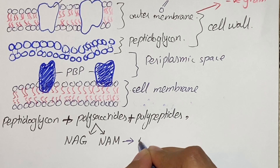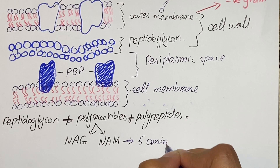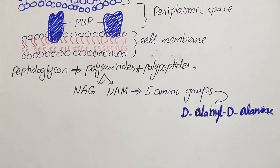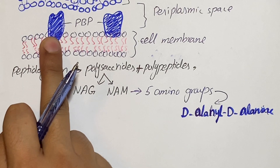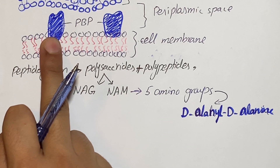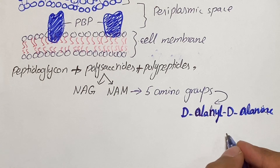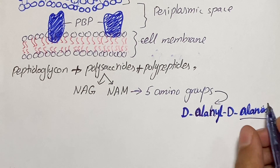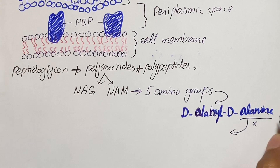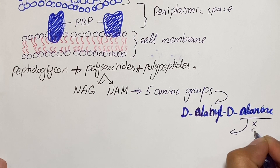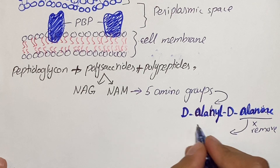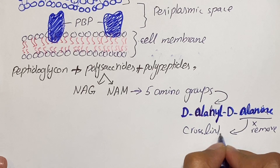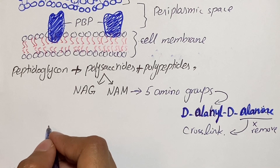NAM is further attached with a peptide chain consisting of five amino acids. This peptide terminates at D-alanyl D-alanine. The penicillin-binding protein removes the terminal D-alanine in the process of forming cross-links between different peptide chains. Different peptide chains are cross-linked together by the removal of the terminal D-alanine of one chain, and this process is called transpeptidation.